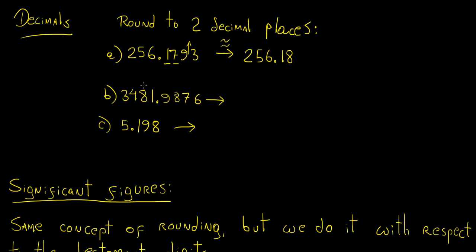For another example, we look at the first two decimal places and then check the number right next to them. In this case it is also closer to 10 than it is to 0, so we round up, meaning the preceding digit increases by one unit. The result is approximately equal to 3481.99.